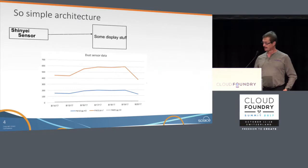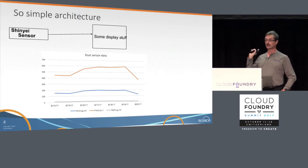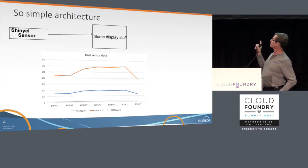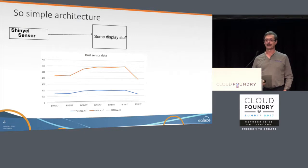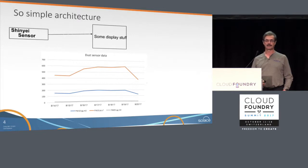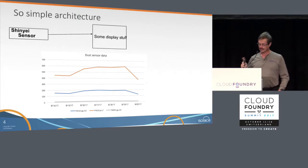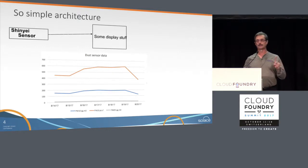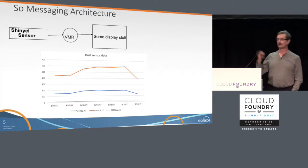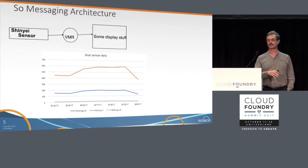Very simple architecture — this sensor connected in to show some display. What you're looking at is data from my area, recorded and dropped into an Excel spreadsheet, graphed out for five days in August. The numbers vary, and there's a reason for that. Because I wanted to treat this as a message rather than just passing raw data, I stuck in the middle a virtual message router construct — community edition, free for use.